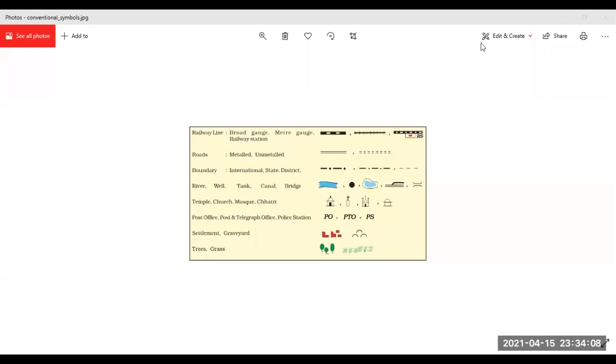Students, we will study here some of the conventional symbols like railway line, roads, metalled and unmetalled, boundaries, international, state and district boundaries. Then how the river, well, tank, canal are shown. You can see the symbols here. The symbols of temple, church, mosque, chhatri, then post office, post and telegraph office, police station, different kinds of settlements, graveyard, trees and grass.